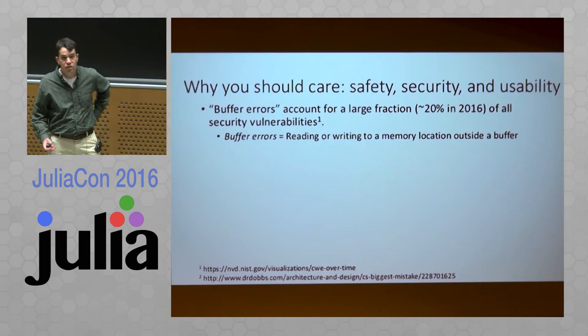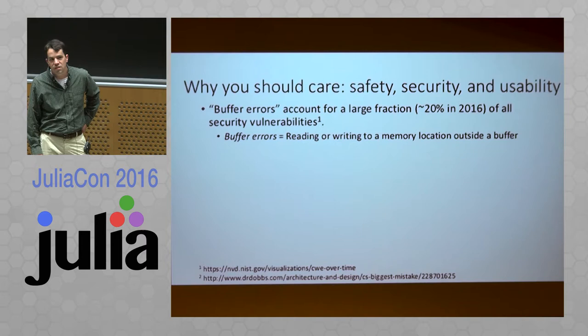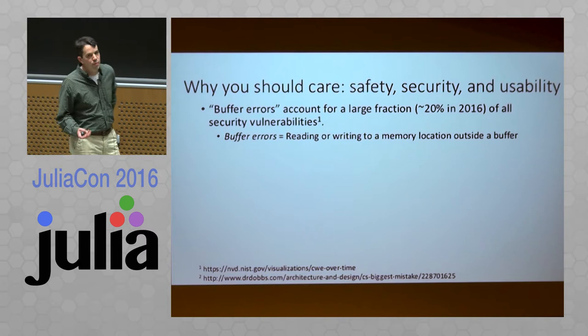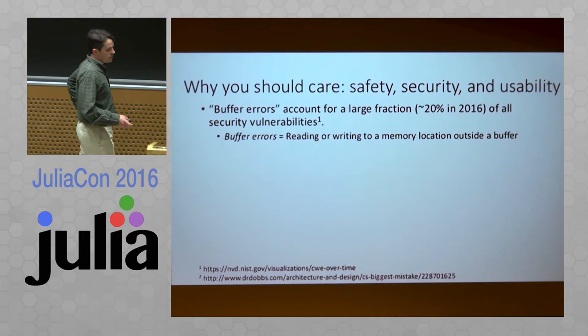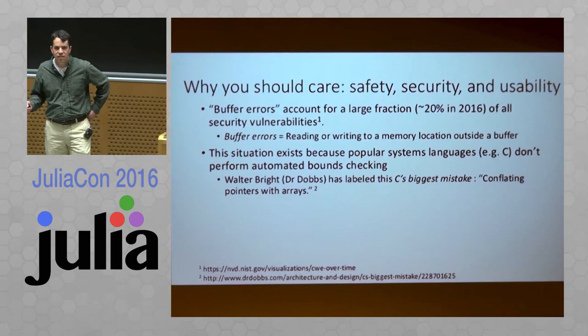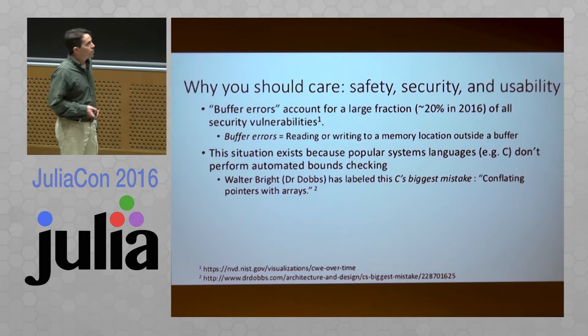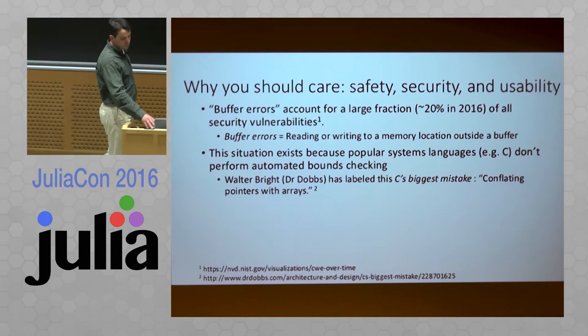A few words about why you should care about bounds check elimination, or bounds checking in general. You might be surprised to learn there are people that keep track of software security vulnerabilities across all software in the wild, and buffer errors account for some dramatic fraction of all security vulnerabilities, even today in 2016. It's because older programming languages did not give you bounds checking for free — it was something the compiler had to do manually. Some people have labeled this one of C's biggest mistakes.